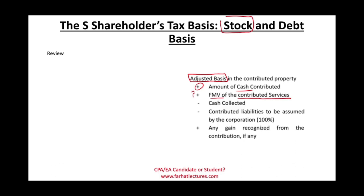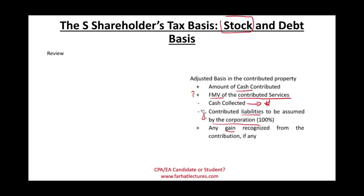If the S corporation pays back the shareholder any cash, that's going to reduce their basis. Any liabilities assumed by the corporation reduce the stock basis as part of the adjusted basis calculation. If a gain is recognized from the contribution of property, that gain is taxable, and once it's taxable it's going to increase your basis. This is the initial establishment of the stock basis.